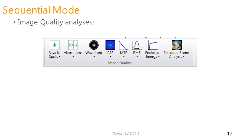In sequential mode, we have a very unique group of analyses, all very specific to sequential mode and the kinds of measurements we can make here. In particular, the aberrations toolset and wavefront toolset can only be used with sequential rays, because we need that exit pupil calculation in order to calculate the wavefront.